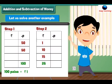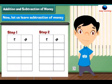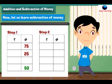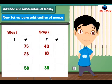Write 26 under the rupees column. Now let us learn subtraction of money. Subtract 10 rupees 50 paise from 40 rupees 75 paise. Step 1: Subtract the numbers in the paise column — 75 minus 25 is equal to 50 paise. Write 50 under the paise column. Step 2: Subtract the numbers in the rupees column — 40 minus 10 equals 30. Write 30 under the rupees column.